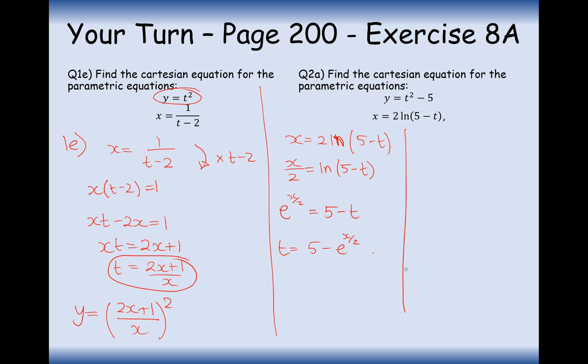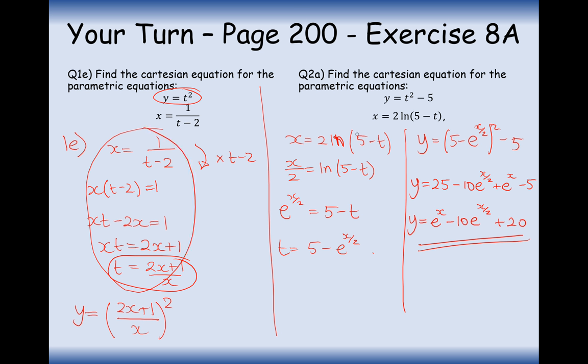Now, we'll substitute it into y. So, we'll do y equals 5 minus e to the x over 2 squared minus 5. We could expand this if we wanted to. Why not? Let's do 25 minus 10 e to the x over 2 plus e to the x minus 5. And simplify. It's going to be e to the x minus 10 e to the x over 2 plus 20. Those are the two answers to this question here. As you see, the first thing I did was rearrange x equal and put it in terms of t. And then substituted it into the y equation. And do a bit of simplification where necessary.